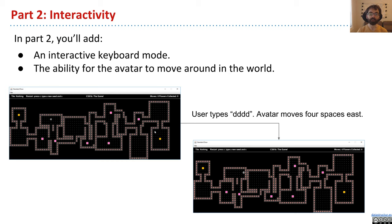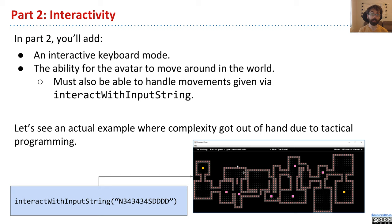And the second part of part two is you'll need the ability for the avatar. So everybody's world will need to have an avatar that can be moved using the keyboard. So if you push D, D, D, D, that means move east four spaces. And the description of the controls are in the specification. And so we can see that the avatar has moved four spaces to the right.